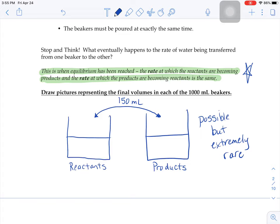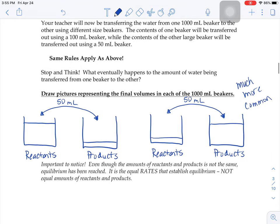To have exactly equal amounts of reactants and products at equilibrium is possible, but extremely rare. What's more likely, much more common, is that you end up with lots of reactants and very little products or very little reactants and lots of products.